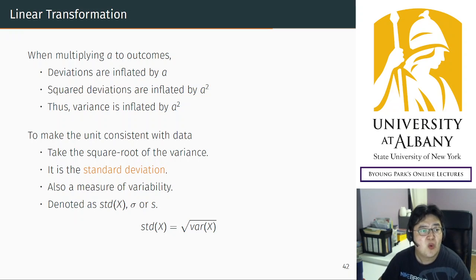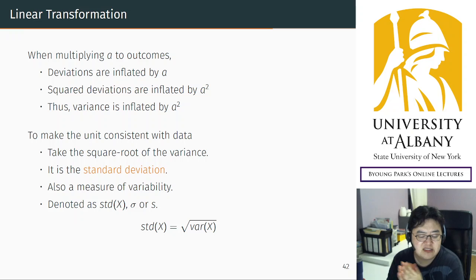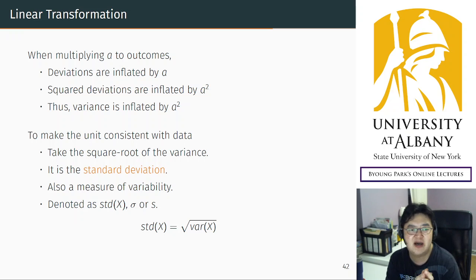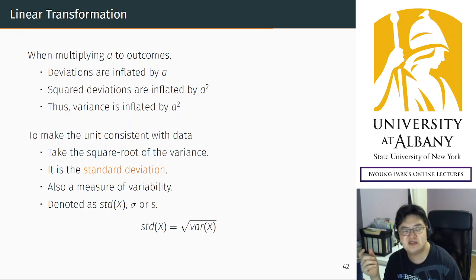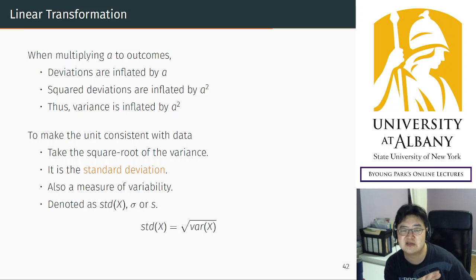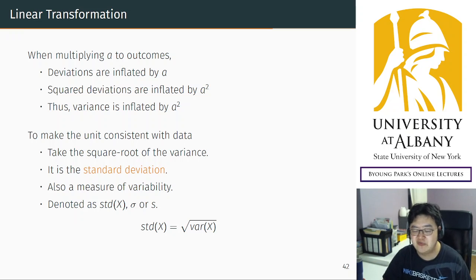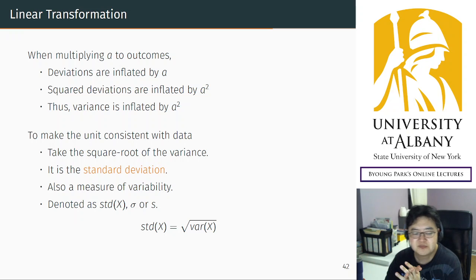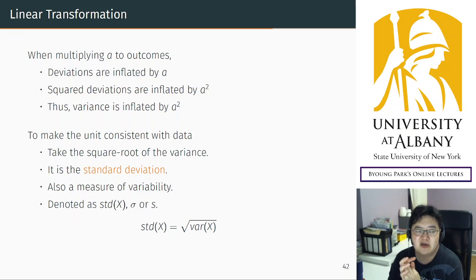This is not desirable. For example, suppose you measure height in inches and want to convert to centimeters — that's simply multiplying by a number, but that multiplication is not preserved by the variance, which is really annoying. Similarly, when you use two different currencies, the variance can be very different because of the multiplication involved in changing units.